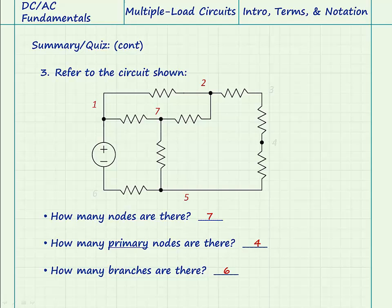How many branches does this circuit include? There are six branches. Remember that branches connect primary nodes and do not include any other primary nodes.